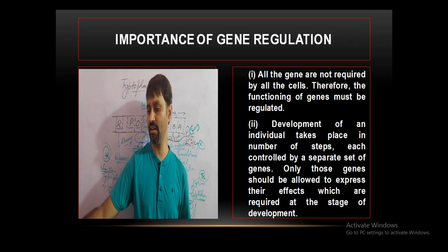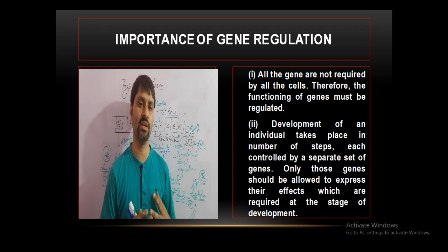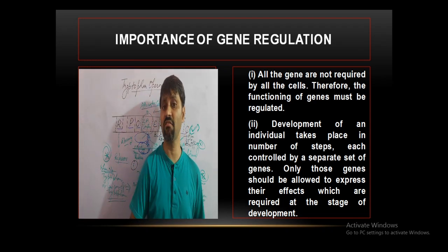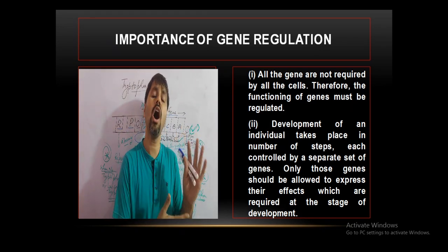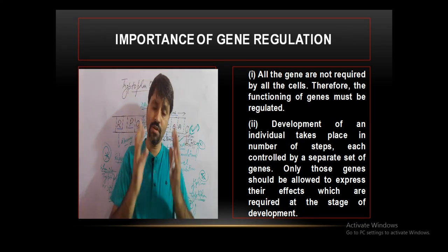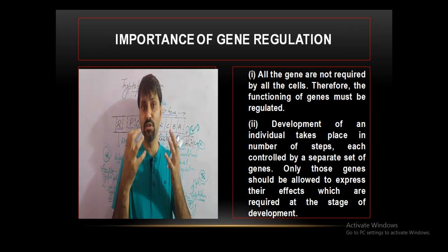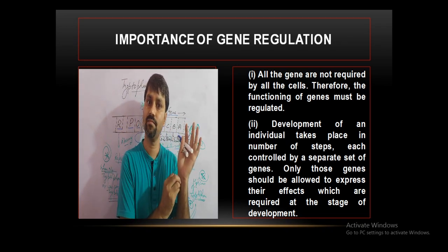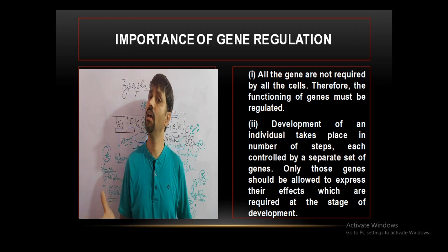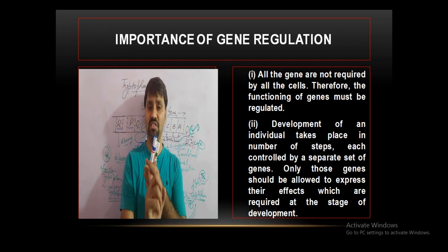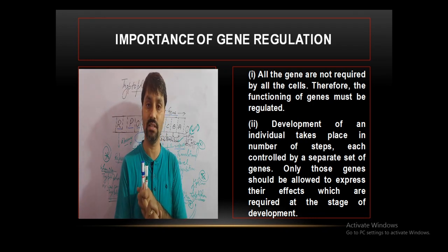Now, very importantly, this is the gene regulation in eukaryotes. The importance of gene regulation is significant because all the genes are not required in all the cells. We have 23 pairs of chromosomes in every cell, and in those chromosomes there are approximately 50,000 genes per cell. Not all of these work in each cell — this is achieved with the help of gene regulation.